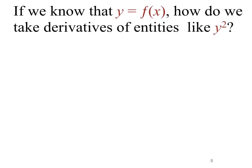So if we know that y is a function of x, a quick question would be how do we take derivatives of entities like y squared? Because we understand that y represents some function of x. You might expect that this would need the chain rule, and that would give us something like 2y times y prime.